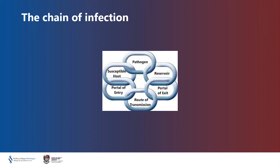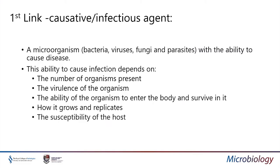When we talk about infection, it is important to understand the chain of infection — the sequence of events and the important factors that are required for a person to have and to transmit infection. There are six links in this chain of infection: a pathogen, a reservoir, a portal of exit, a route of transmission, a portal of entry and a susceptible host. We'll go through these in turn.